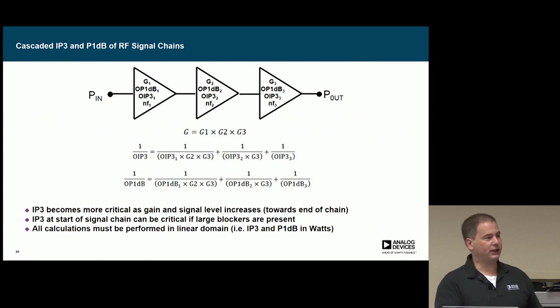So cascaded IP3, because like I talked before, each device has its own IP3. You want to be able to know what's going to end up dominating things is going to be the first device. And that's what you want to keep track of.